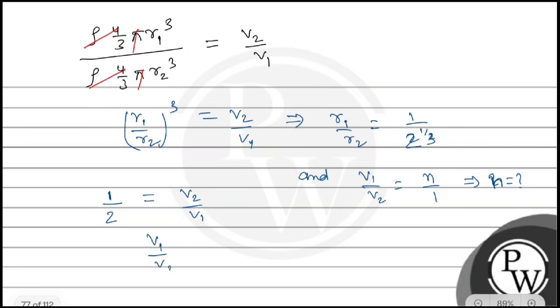So from here we can see v1 by v2 equals 2 by 1. In the question we're given v1 by v2 equals n by 1. Simply comparing, we get n equals to 2. This is the value of n.